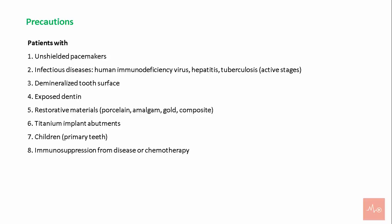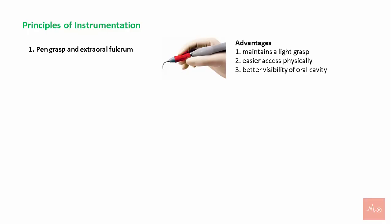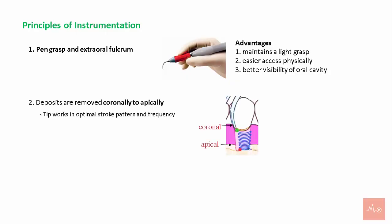Ultrasonic scalers are used with a pen grasp and an extraoral fulcrum. Advantages of the extraoral fulcrum include maintaining a light grasp, easier access, better visibility of the oral cavity. Deposits are removed coronally to apically, allowing the insert or tip to work at its optimal stroke pattern and frequency.